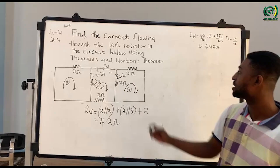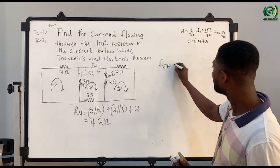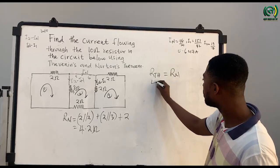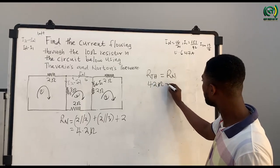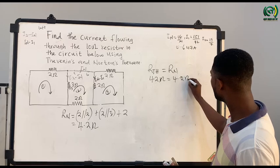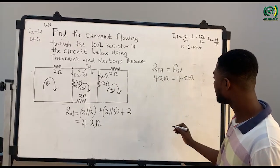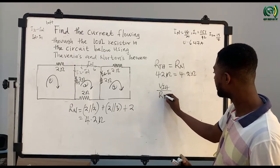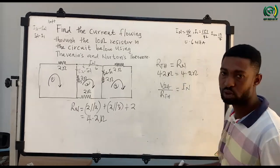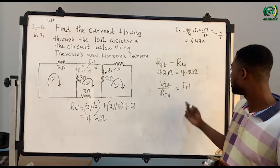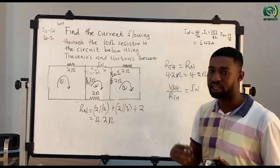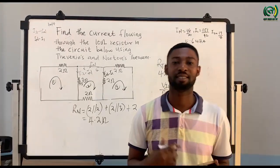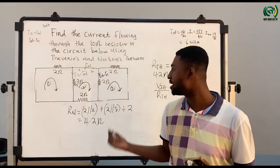We realize that Rth equals Rn — both gave 4.2 ohms. We also find that Vth / Rth = IN. So if you want to calculate Norton's current, you simply divide Vth by Rth to get IN. Thank you for watching Kentech96 TV. If you are new to this channel, kindly subscribe for more updates.